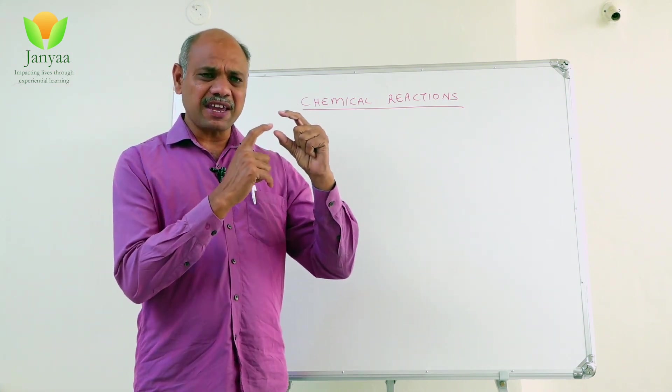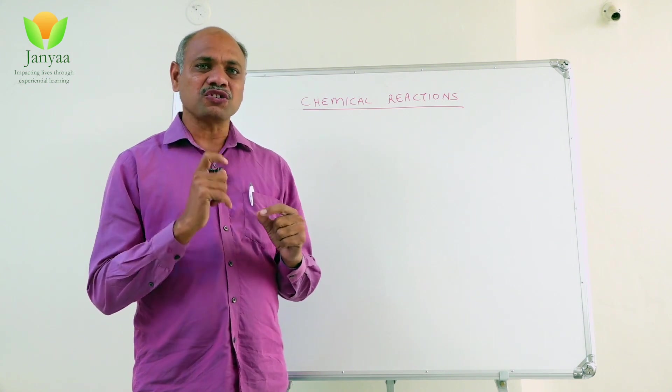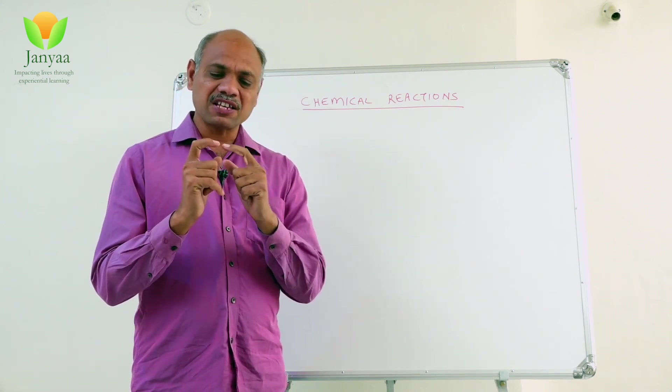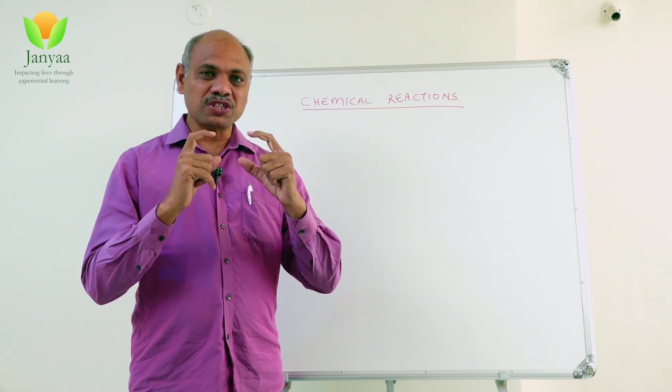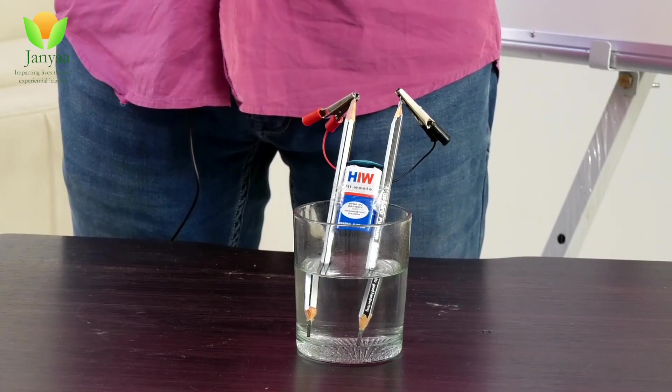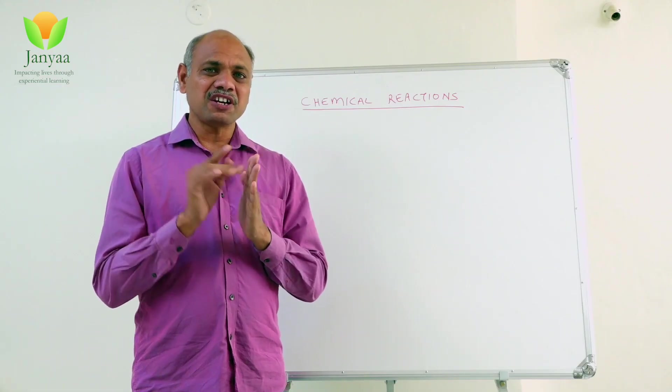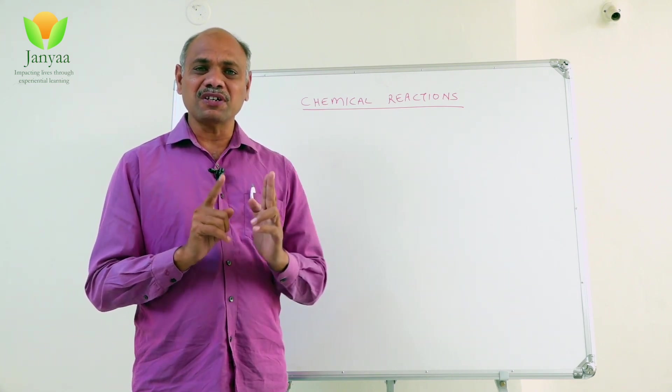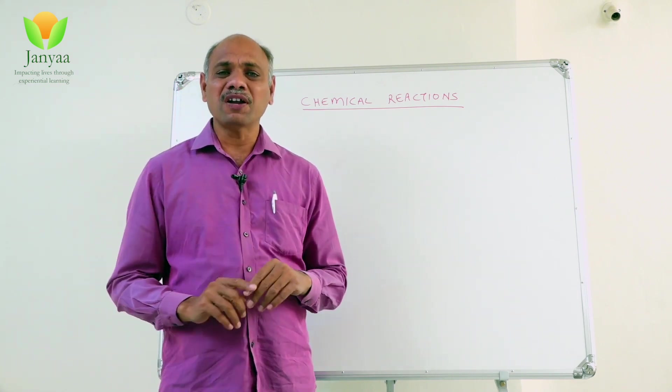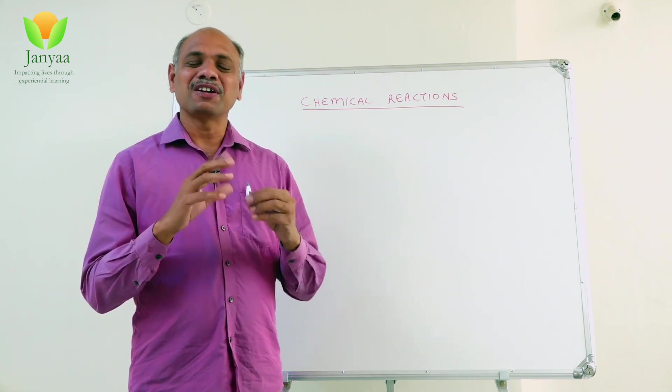if the length of the air is one centimeter, in another test tube, length of the air or gas will be half centimeter. Clearly, it shows that oxygen and hydrogen combined in one is to two ratio. Two molecules of hydrogen is combining with one molecule of oxygen to form water.